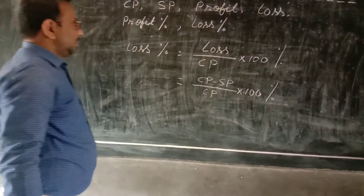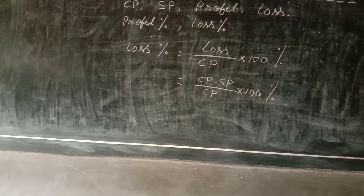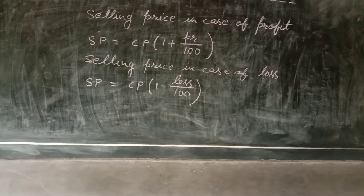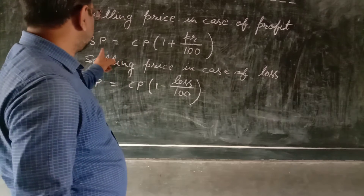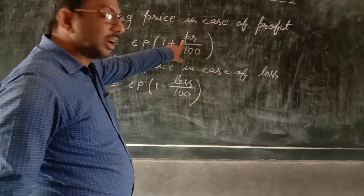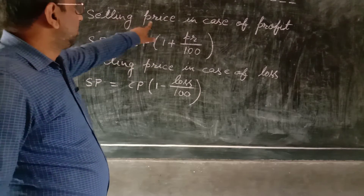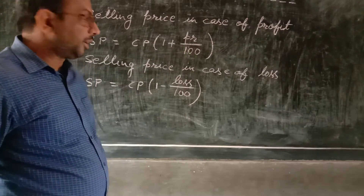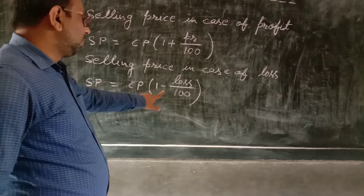This is the explanation we have completed. Now before starting the exercise, we need two more formulae. Selling price in case of profit: SP equals CP into (1 plus profit by 100). Similarly, selling price in case of loss: SP equals CP into (1 minus loss by 100).